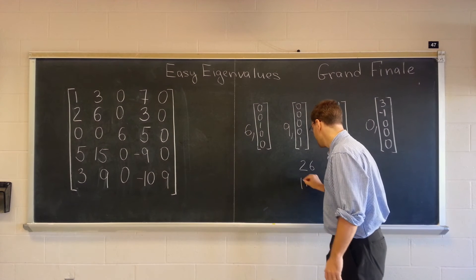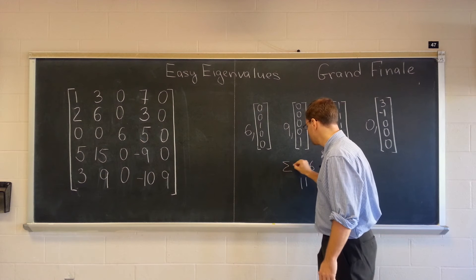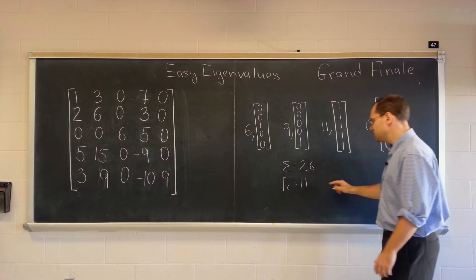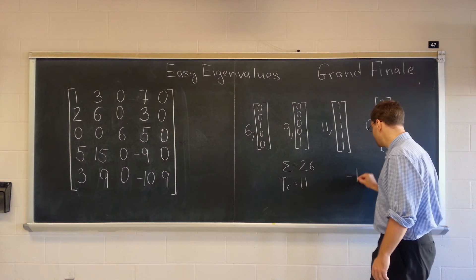Which means, the sum is 26. The trace is 11. Which means that the remaining one is negative 15.